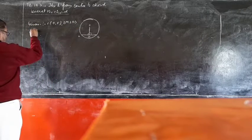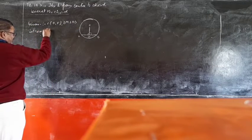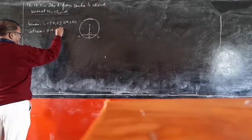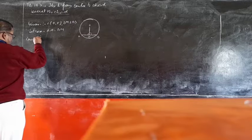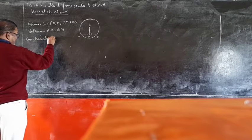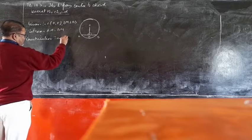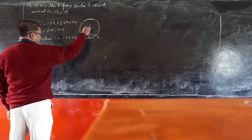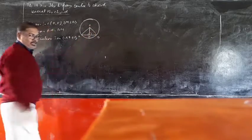To prove: AM is equal to BM. For the construction, join OA and OB.